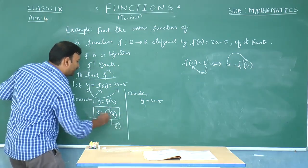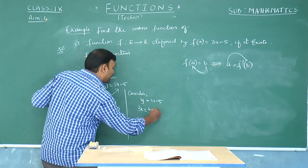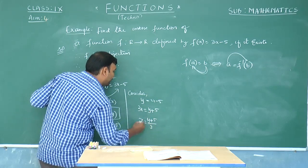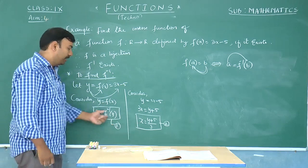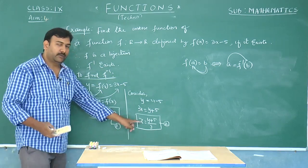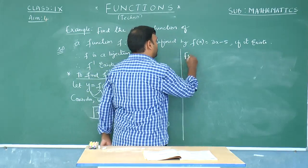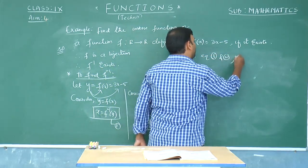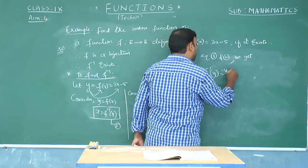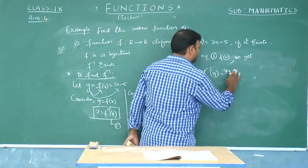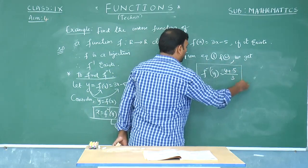From the third term, extract the value of x: 3x = y + 5, so x = (y + 5)/3 — this is equation 2. From equations 1 and 2, the left-hand sides are equal, so we equate the right-hand sides, and we get f inverse of y = (y + 5)/3. So we have obtained the inverse function rule in terms of y.